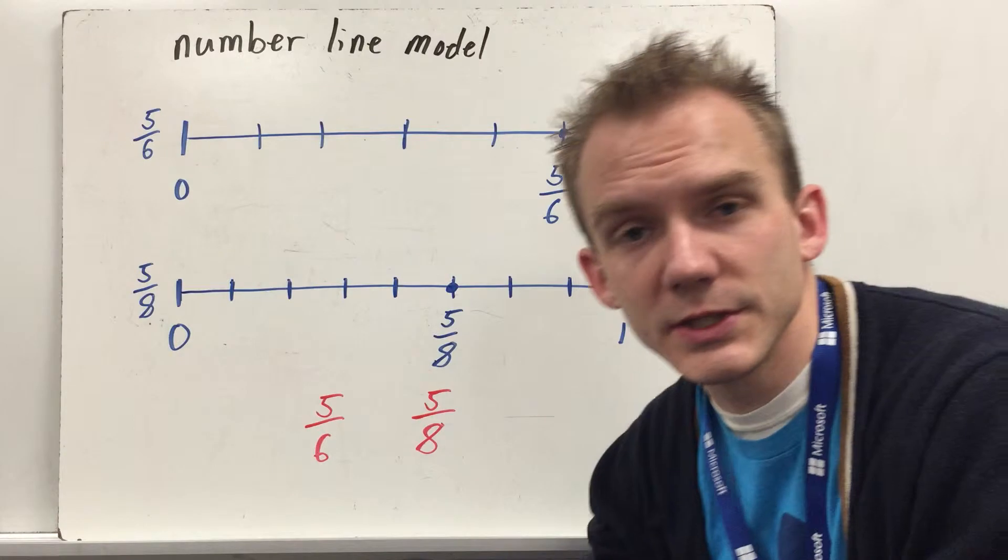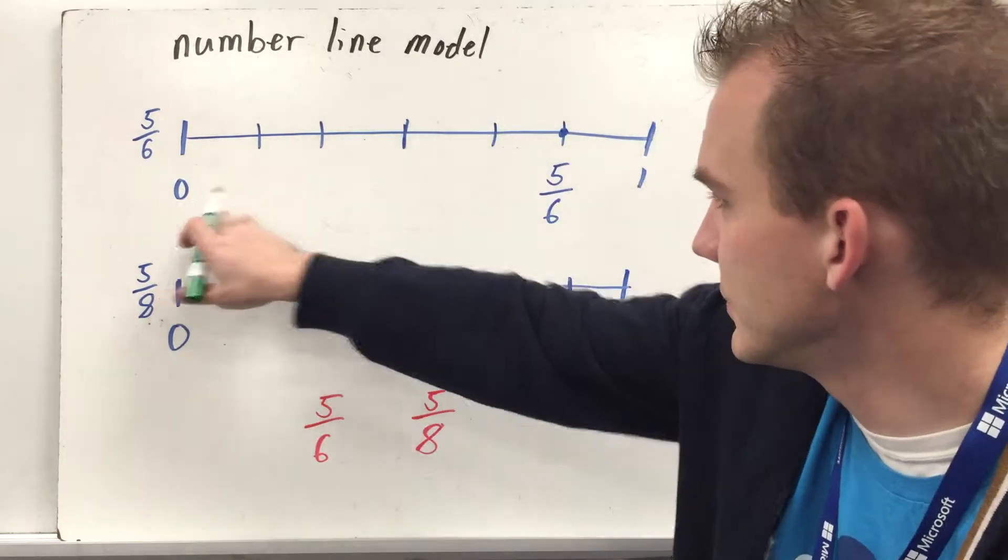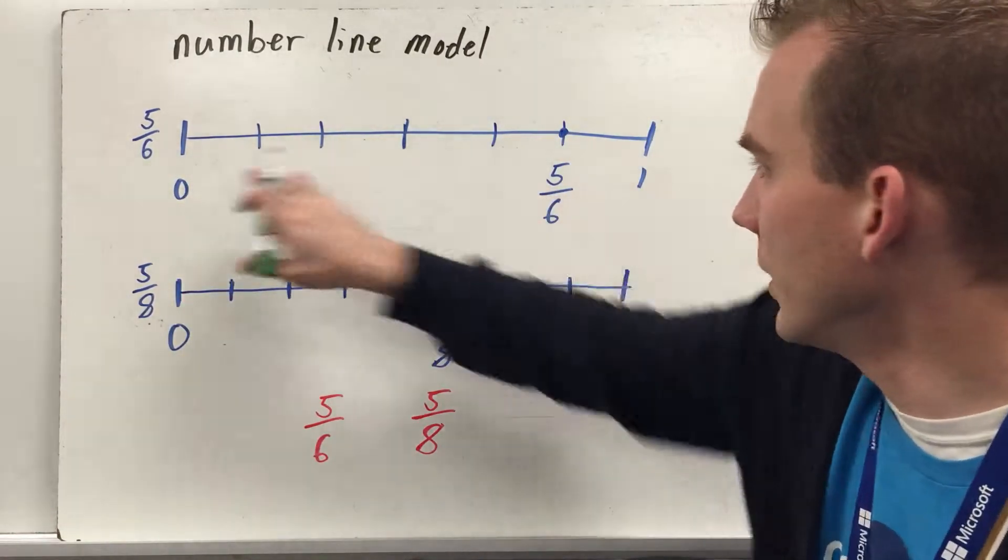A number line model is very similar to what we just saw with those rectangles, except you have just a number line. So this one is six. Zero to one, I have one, two, three, four, five.